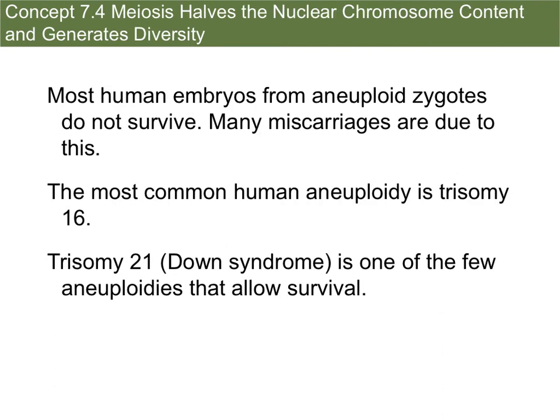Most human embryos from aneuploid zygotes do not survive — many miscarriages are due to this, as there's either too much or not enough genetic information for the zygote to survive. The most common human aneuploidy is trisomy 16. Trisomy 21, which you've probably heard of, causes Down syndrome, and it's one of the few aneuploidies that actually allows a zygote to survive.